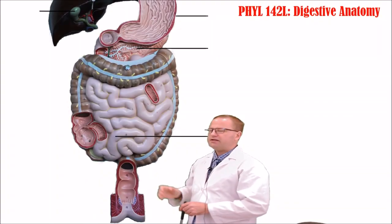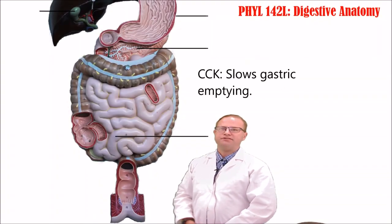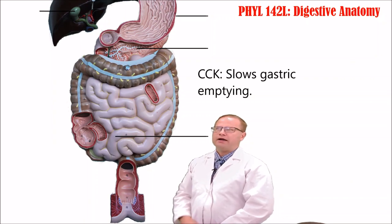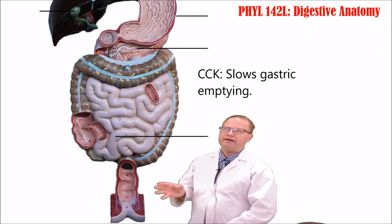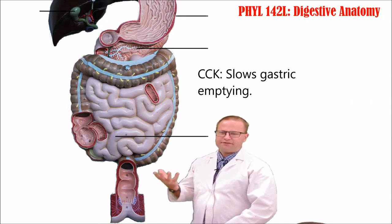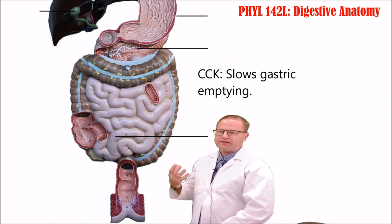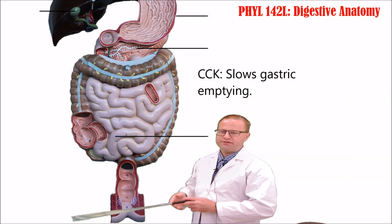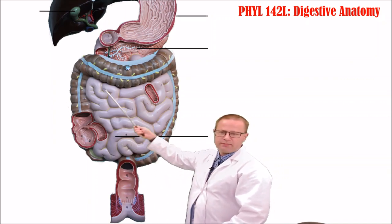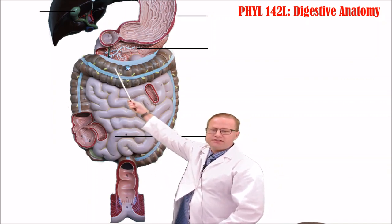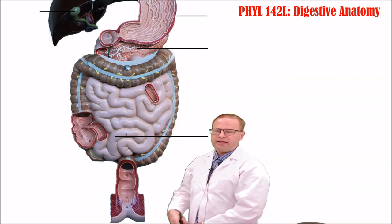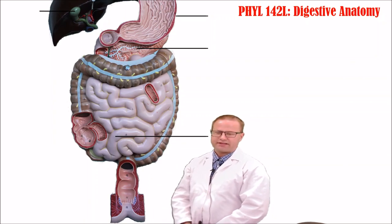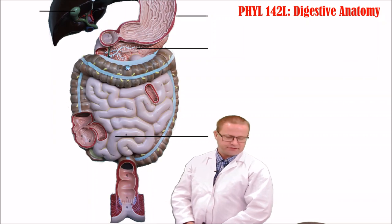The duodenum also secretes something called cholecystokinin or CCK, which helps control the rate of gastric emptying. When there's a lot of fatty food moving from the stomach into the small intestine — which takes a while to break down and absorb — the duodenum secretes CCK, which acts on the stomach to slow its rate of gastric emptying. That's an important function of CCK.